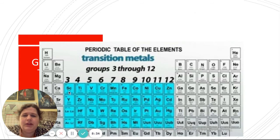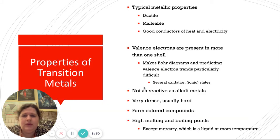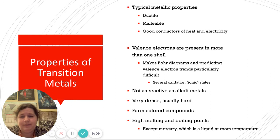Next we come to the transition metals — I like to call these the rebels of the periodic table because they don't follow the rules. Groups one and two had a pattern: one valence electron, two valence electrons. When we get to the transition metals, they go all over the place. They have typical metallic properties — ductile, malleable, good conductors — and that's about where the similarities stop. The transition metals can have valence electrons all over the place; they can change how many valence electrons they have. They're also not as reactive as the alkali metals, so they don't explode, but they do form a lot of compounds, and when they do, they're usually colored. Cobalt produces brilliant blues; copper produces green, like the Statue of Liberty.